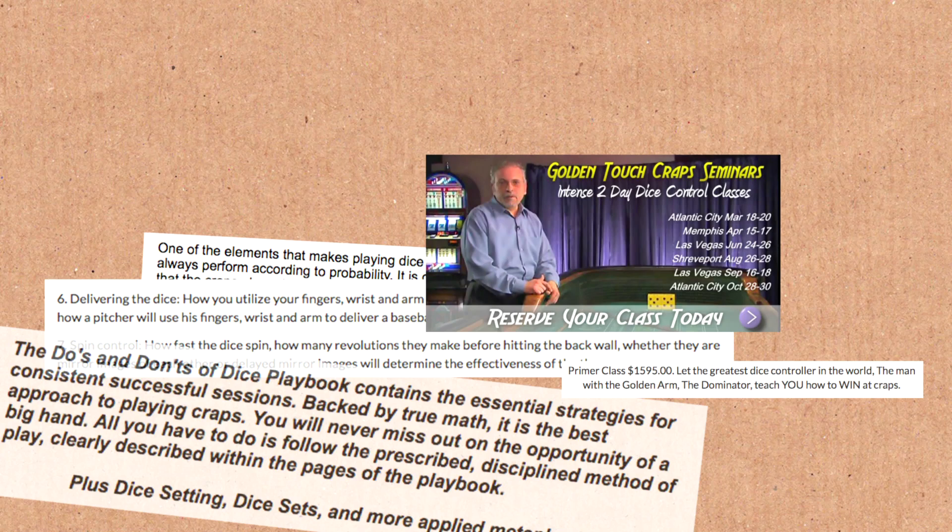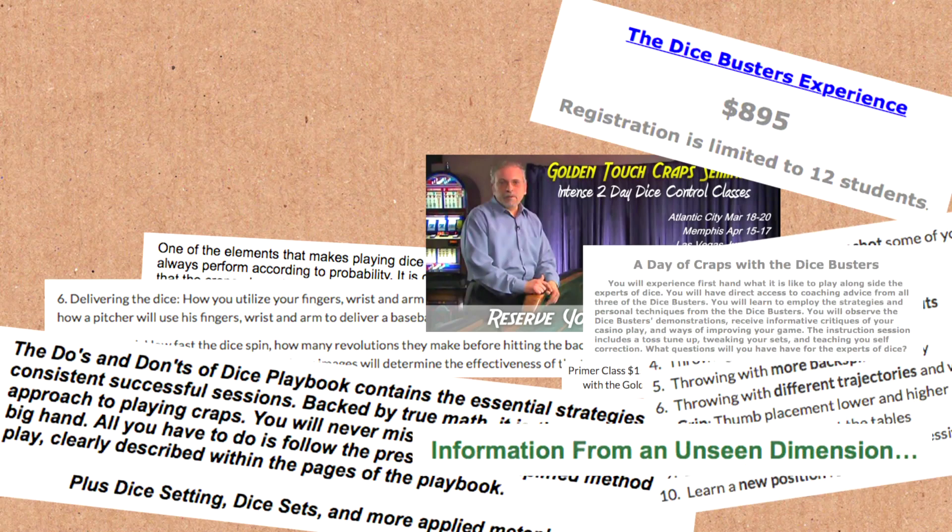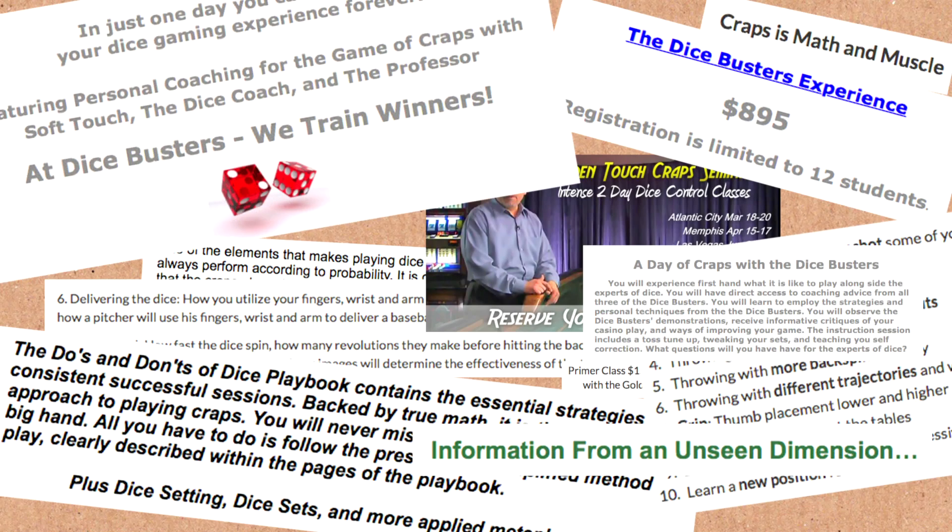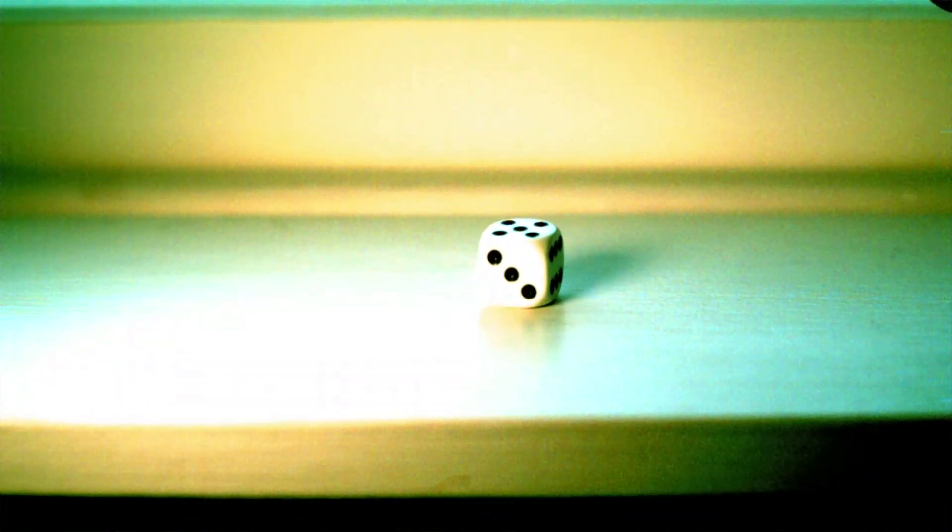There are schools in Nevada which claim to, which purport to teach you how to roll dice in a casino and control them. It's pretty questionable, but very roughly speaking, what they try to teach you is to roll the die so that it slides around without tumbling.